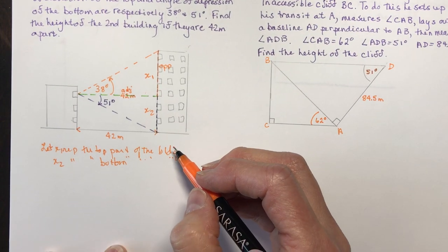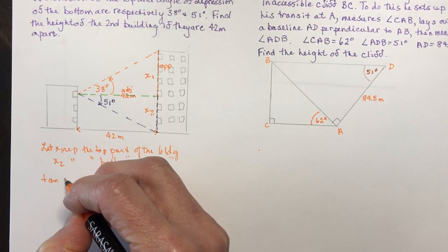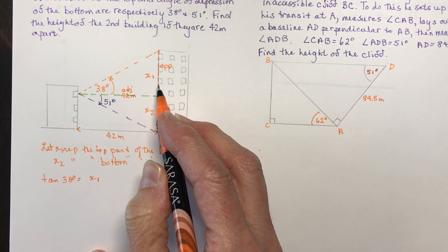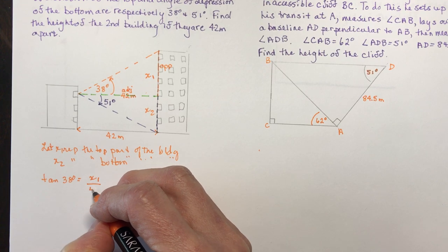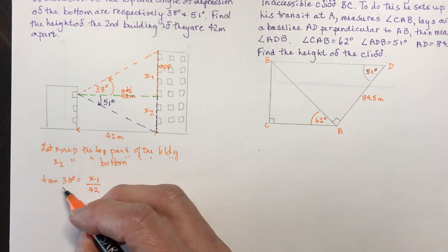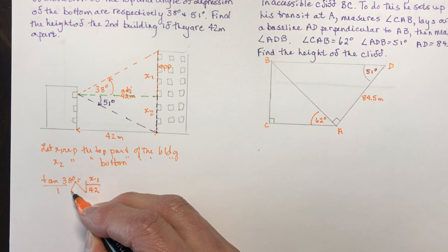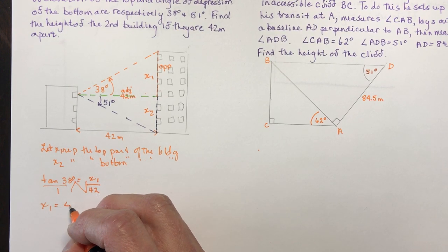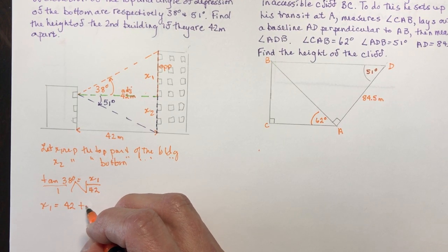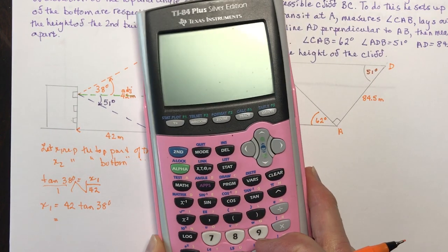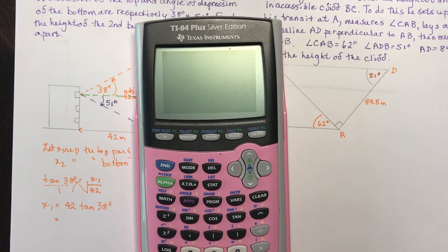So tan of 38 degrees equals x1 over 42. Solving for x1: x1 equals 42 times the tan of 38. Using the calculator, 42 times tan 38 gives approximately 32.8.